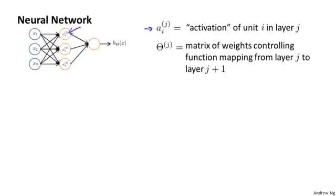So concretely, this a superscript two subscript one, that's the activation of the first unit in layer two, in our hidden layer. And by activation, I just mean the value that is computed by and that is output by a specific unit. In addition, our neural network is parametrized by these matrices, theta superscript j, where theta j is going to be a matrix of weights controlling the function mapping from one layer, maybe the first layer to the second layer, or from the second layer to the third layer.